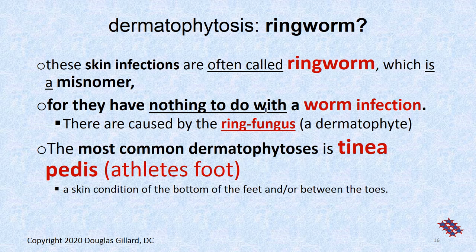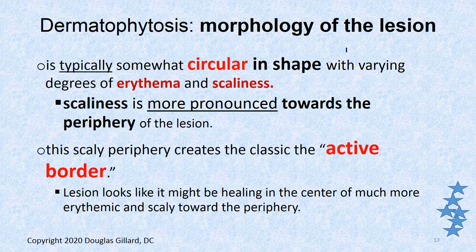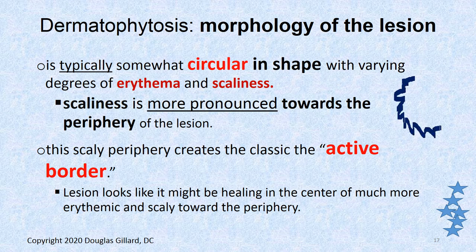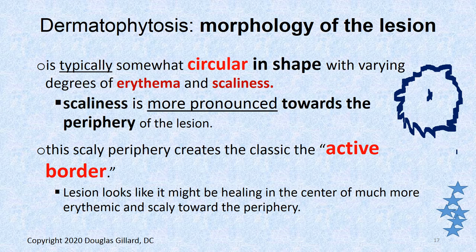The most common type of this fungal infection is tinea pedis, which is caused by T. rubrum and causes athlete's foot. The lesion gets the name ringworm because it looks circular — toward the middle it looks kind of like normal skin, but around the outside you get this really flaky, erythematous look. It looks like a ring. So that's why it got the name ringworm, and it doesn't always have to look exactly like that.